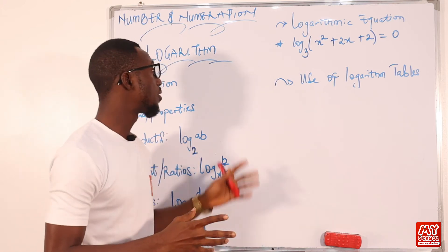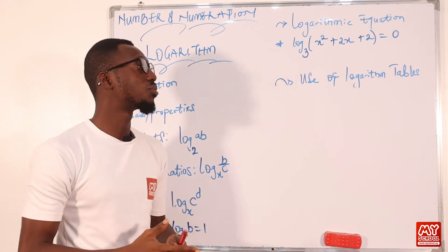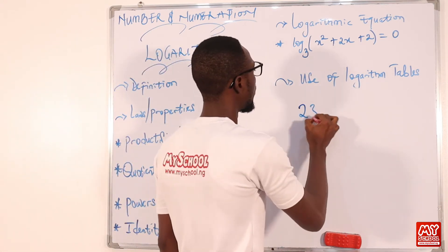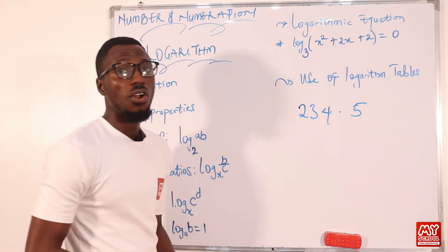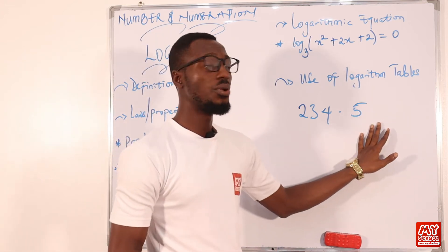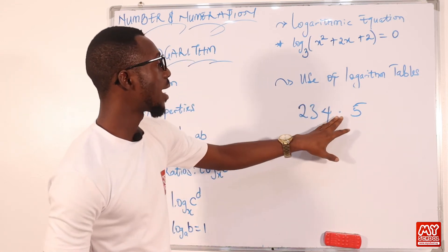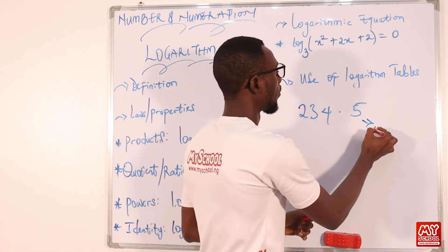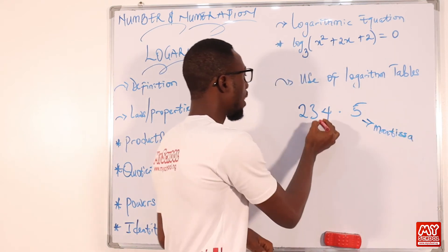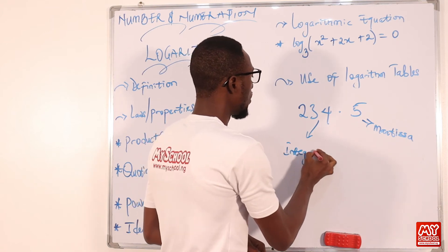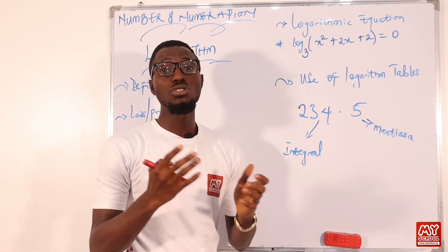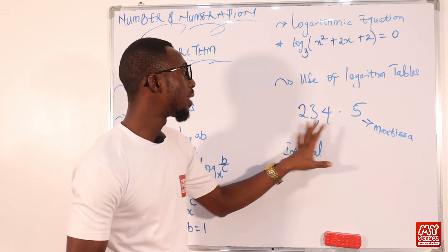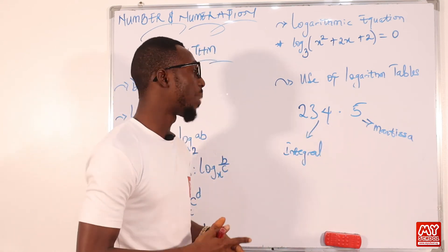Now let's look at the use of logarithm tables. One purpose of logarithm is to turn a multiplicative process into an additive process. When we look at a logarithm value, to the left of the decimal point is the integral part — also called the characteristic — and to the right of the decimal point is the decimal part, called the mantissa.